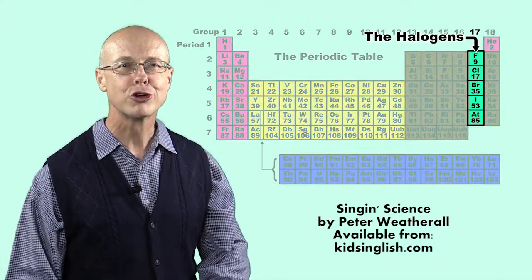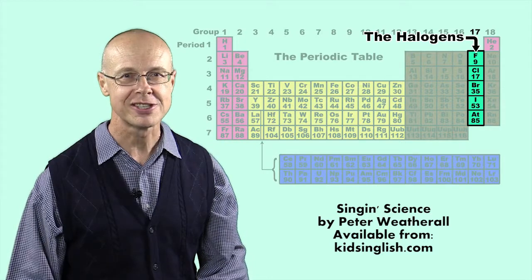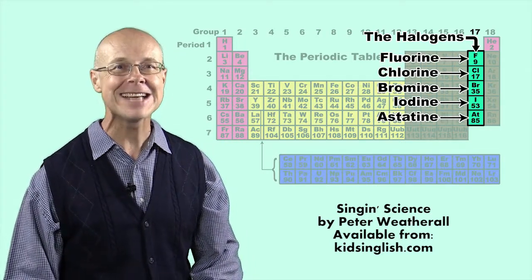The elements of group 17 in the periodic table are known as the halogens: fluorine, chlorine, bromine, iodine, and astatine.